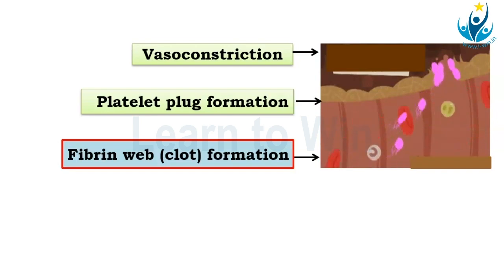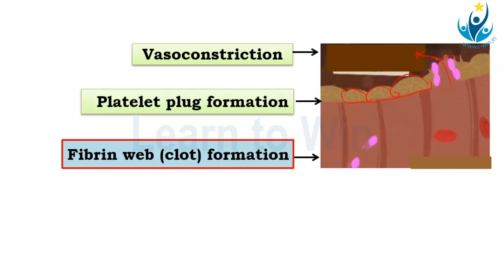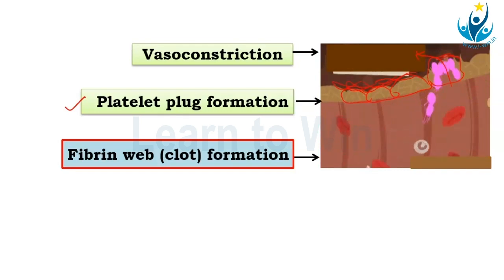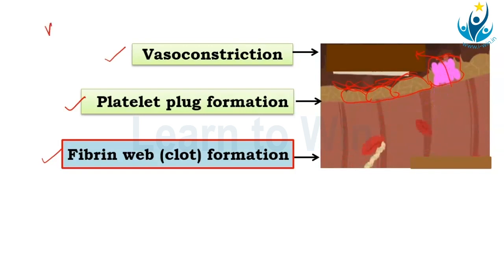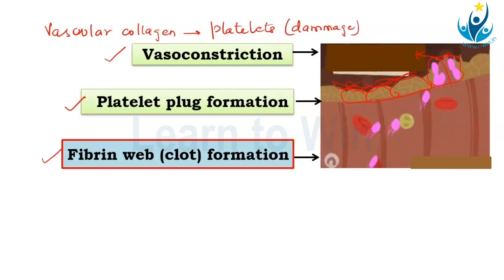In this diagram you can see the endothelial cells of the blood vessel. There is a rupture in them, allowing blood to release out. The collagen fibers present here aggregate the pink structures called platelets. The platelet plug is formed, and then it is further converted into a clot by a fibrin web. At the same time vasoconstriction happens. The initiation of all these steps is the collagen's reaction to platelets due to damage.